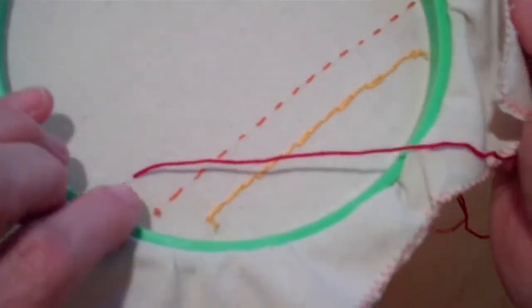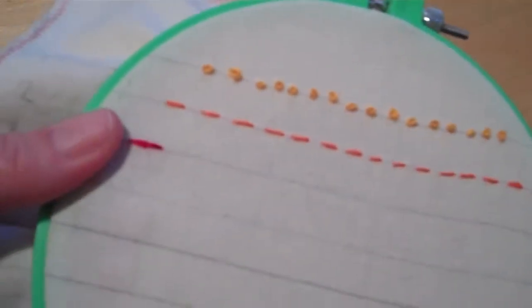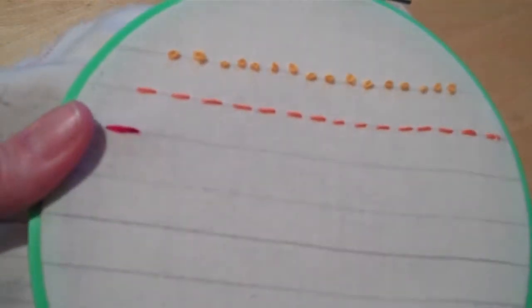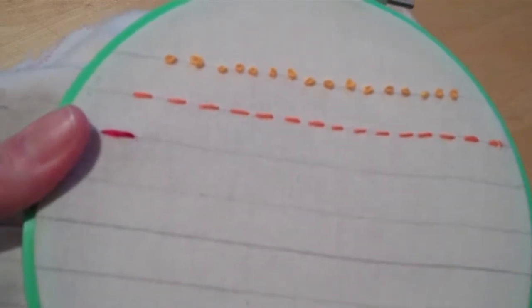Again, I'm always keeping my finger here on the back to feel that no threads are getting tangled. And I keep my finger where the stitch is so I can see where to come up. Because you might come up and you're like, oh, that's the wrong spot. Nope, that's the wrong spot.